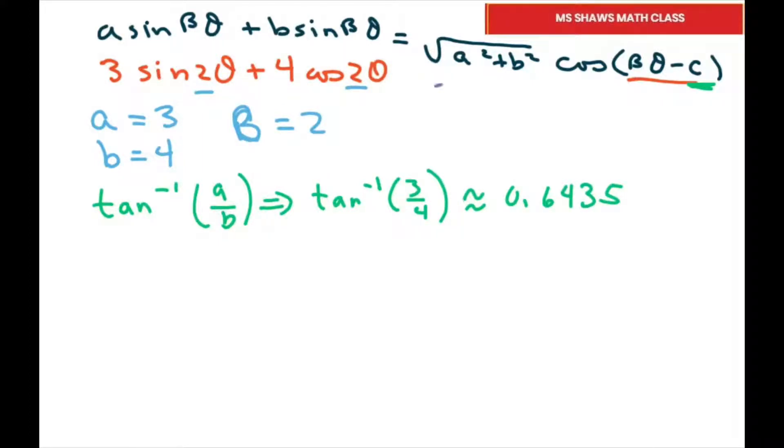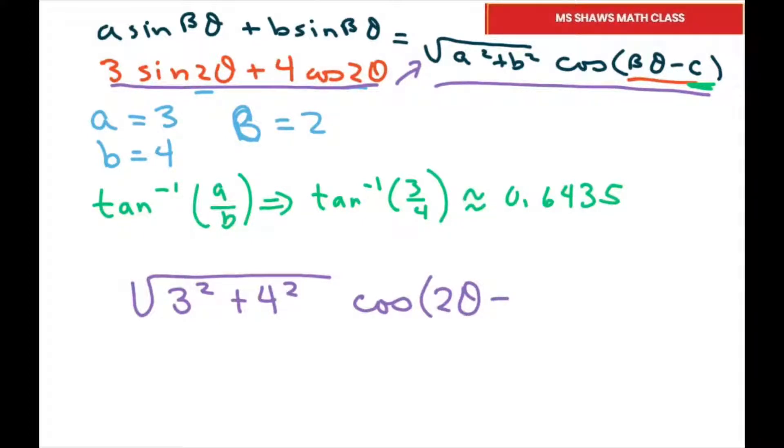Now we're just going to fill all this in. You're going to get square root of 3 squared plus 4 squared, cosine of big B, which is 2 theta minus C. C is 0.6435. So this is square root of 25, which equals 5. Our final answer is approximately 5 times cosine of 2 theta minus 0.6435.